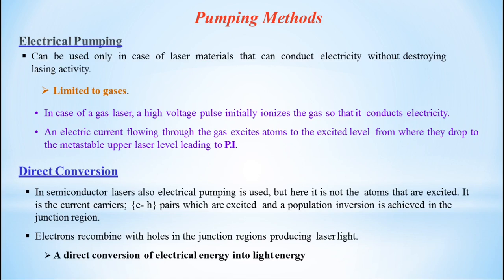The electrons recombine with holes in the junction region producing laser light. This is called direct conversion — a direct conversion of electrical energy into light energy. These are some of the pumping methods.